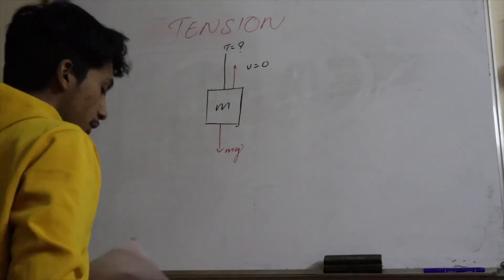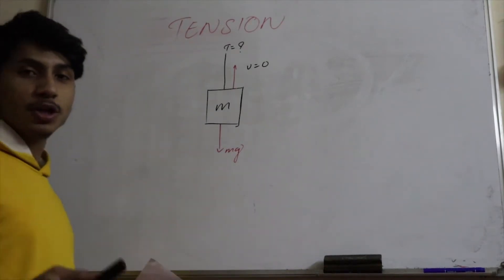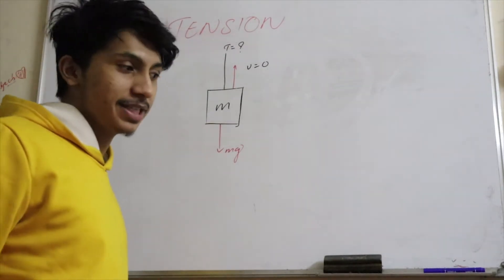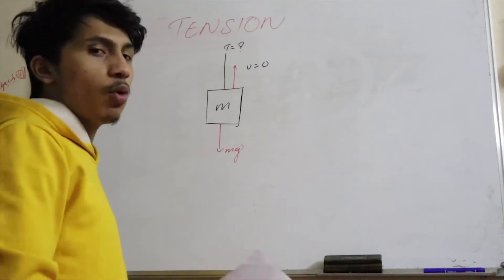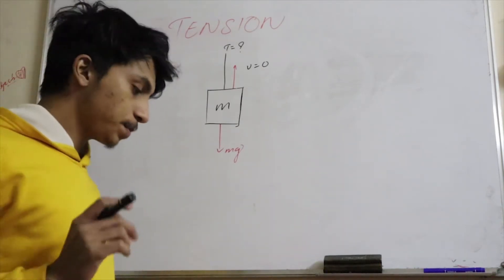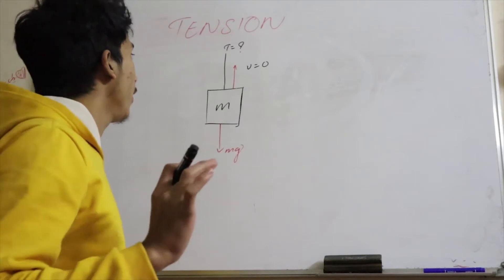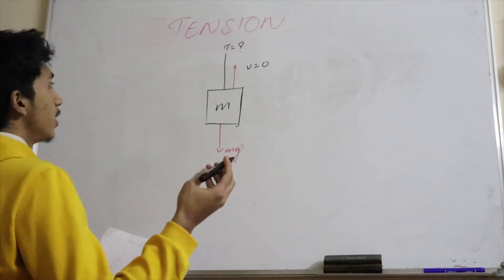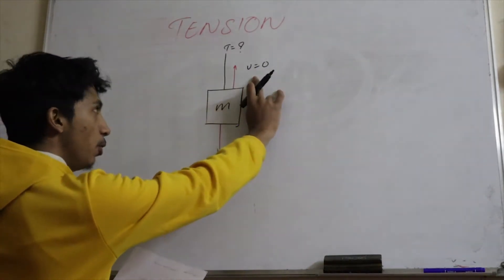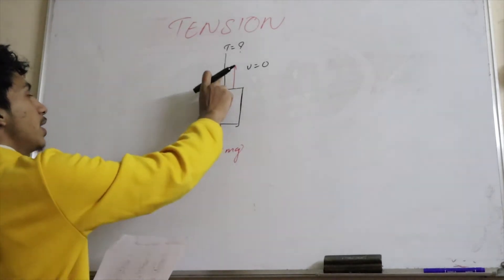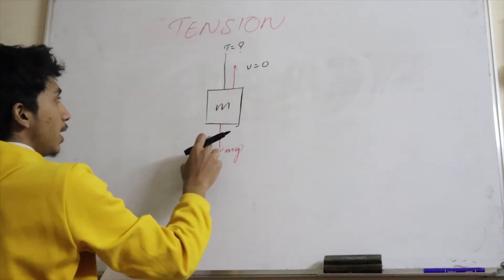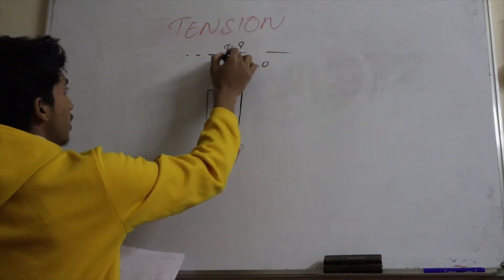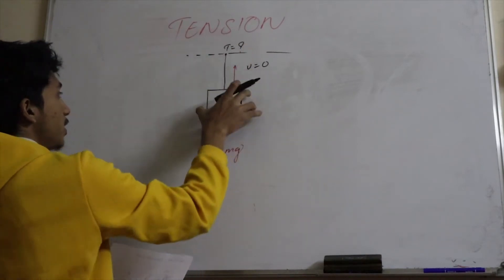I'd like to talk about tension — I've been getting a lot of confusion while solving tension problems. What is the actual concept of tension? First, I'll describe one condition: when the velocity is zero and the mass is pulled by one string upward. So here is a string hanging up, and this is the mass.